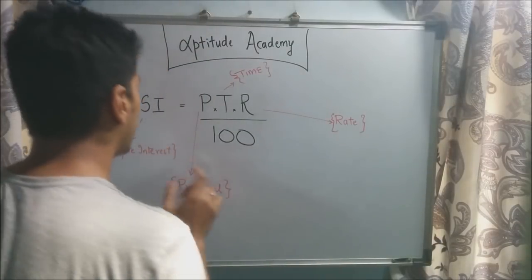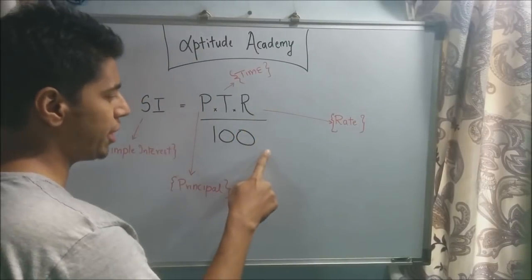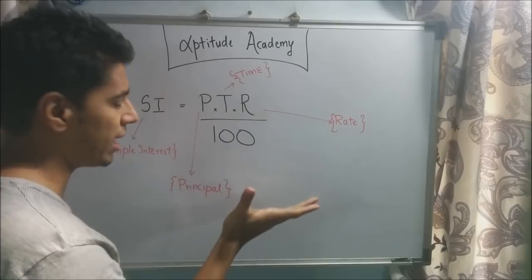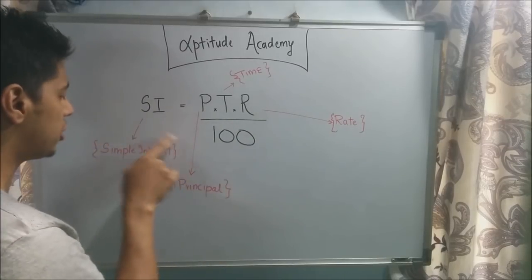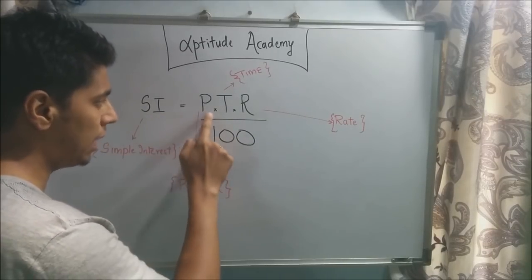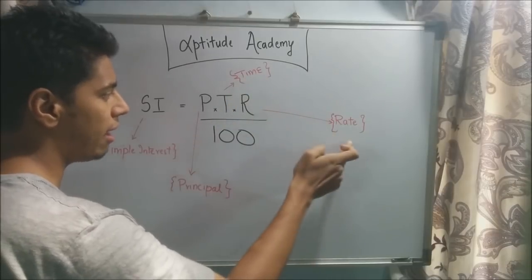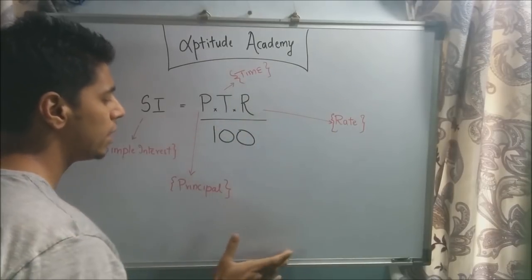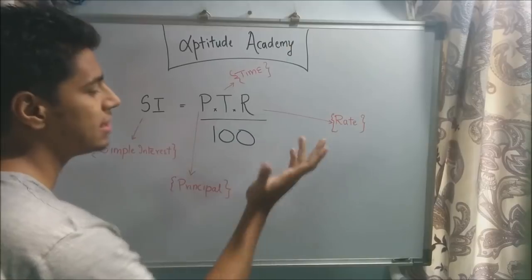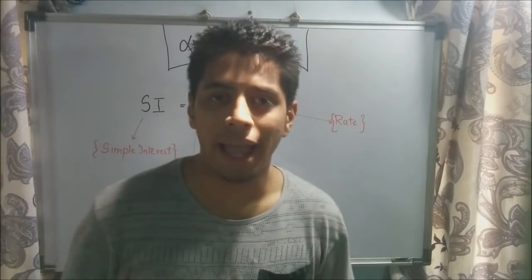To calculate simple interest, there's a very simple formula: SI is equal to PTR upon 100. This is the only formula you need to memorize. Your simple interest is denoted by SI, your principal by P, time by T, and rate by R.